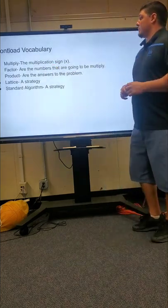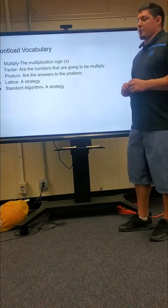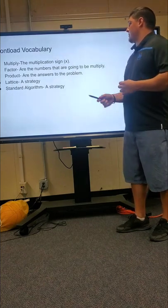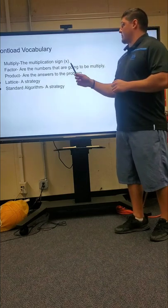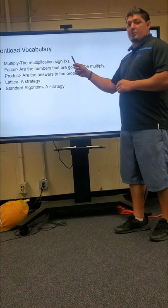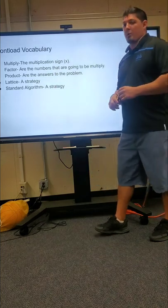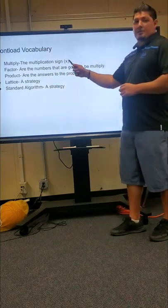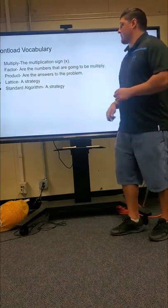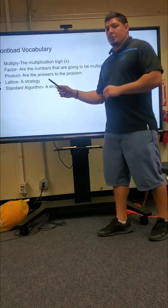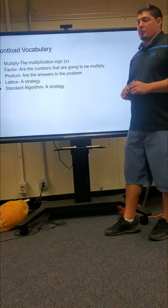First, vocabulary. The multiplication sign — obviously with math you have multiple signs, but we're identifying the sign of multiplication as the x. The factor means that two numbers are going to be multiplied, so you have a factor which is a number, times the multiplication sign, times another factor which is a number. The product is the answer to the problem — a factor times the sign times another factor equals a product. The standard algorithm is another strategy I'm going to be teaching you today as well.